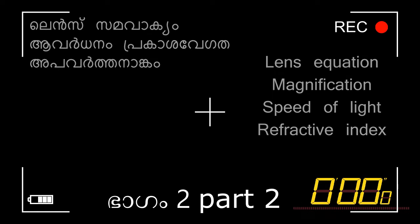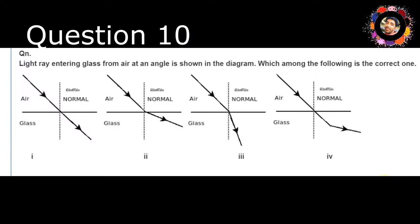I am going to ask you about the data. The angle of the light entering glass from air is shown in the diagram. Which one of the following is the correct one? The angle of the light entering glass is also shown.